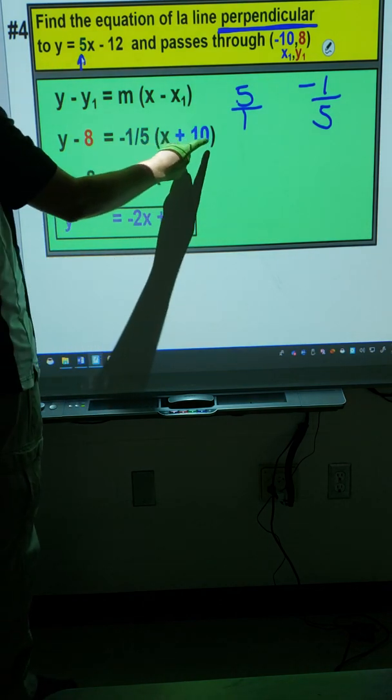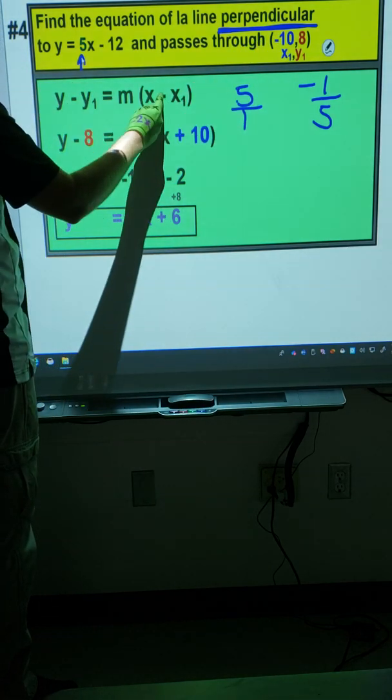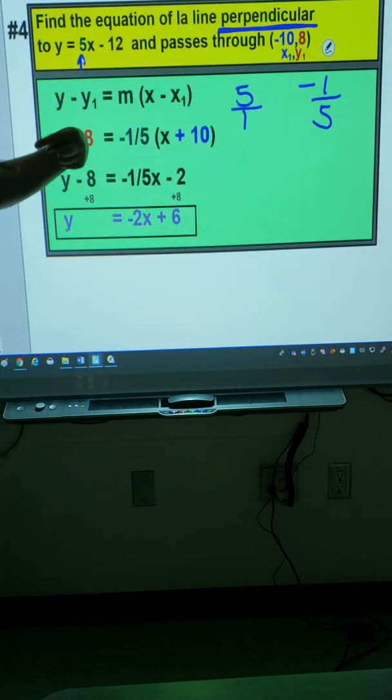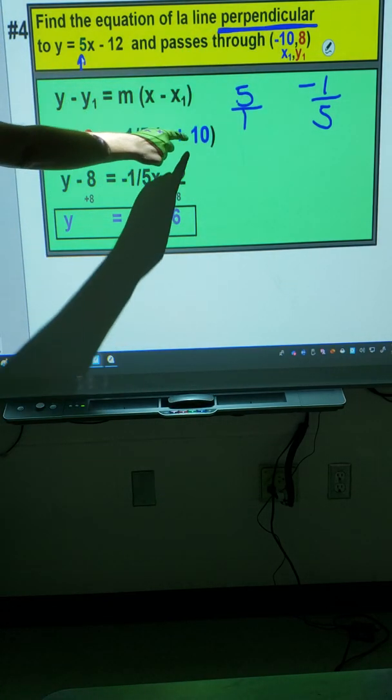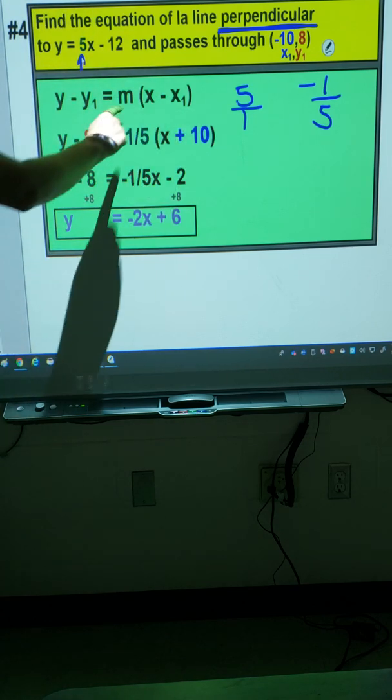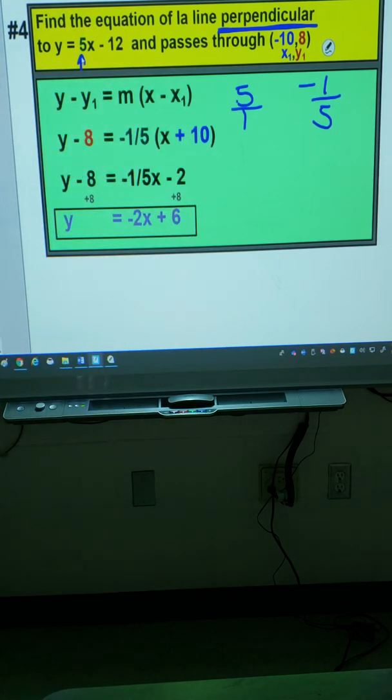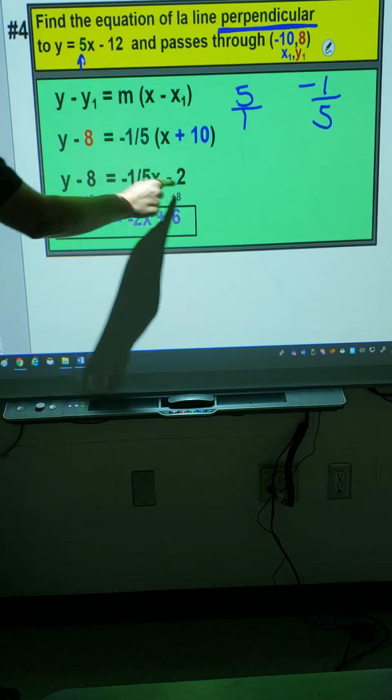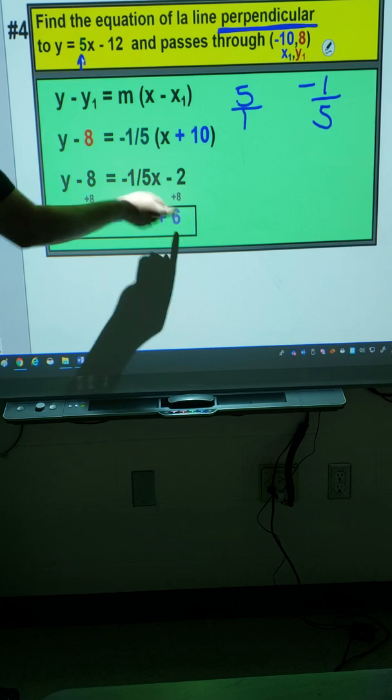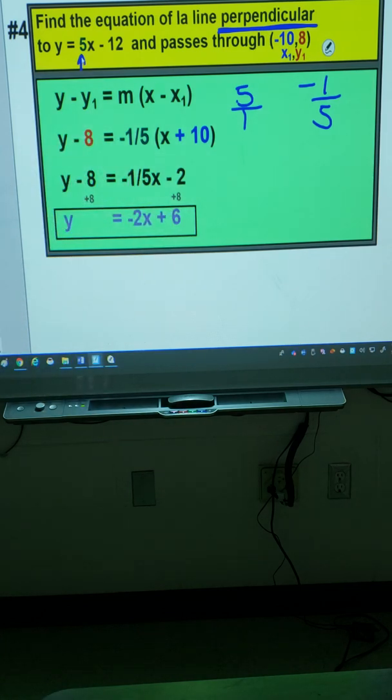Just so you can see here, this was negative 10. So when you subtract negative 10, those two negatives together make a positive. Which I filled in straight away. And when you distribute negative 1 fifth times 10 is negative 2. And use your fraction button if you are not sure. Add 8 to both sides to finish up. And negative 2 add 8 is 6.